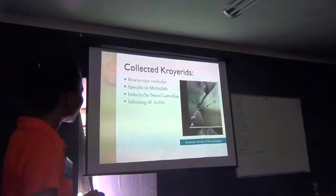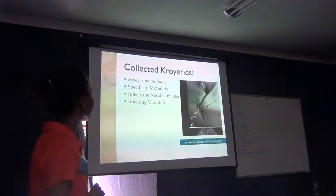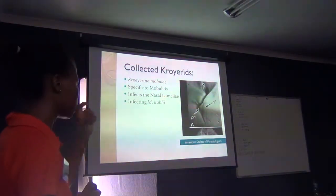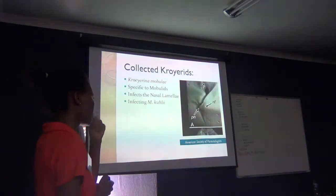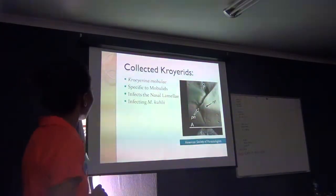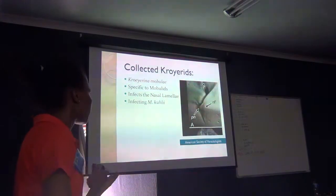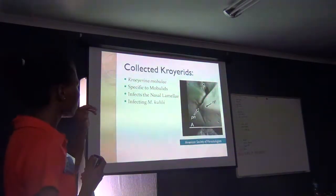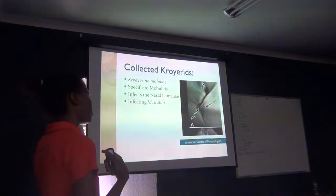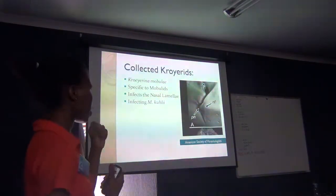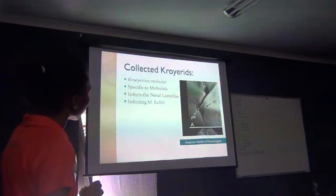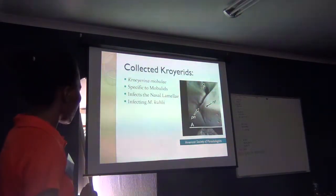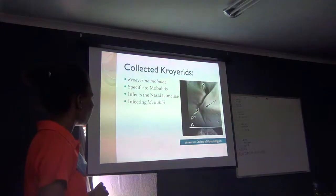In the family Groyeridae, we were able to identify Groyerina mobuli. Unfortunately there's no picture available — it's a very small copepod and hard to photograph. They are also specific to mobula rays, and interestingly, unlike the others which infect the gills and body surface, this one infects the nasal lamellae. They're very small, and we found them infecting Mobula kuhlii.